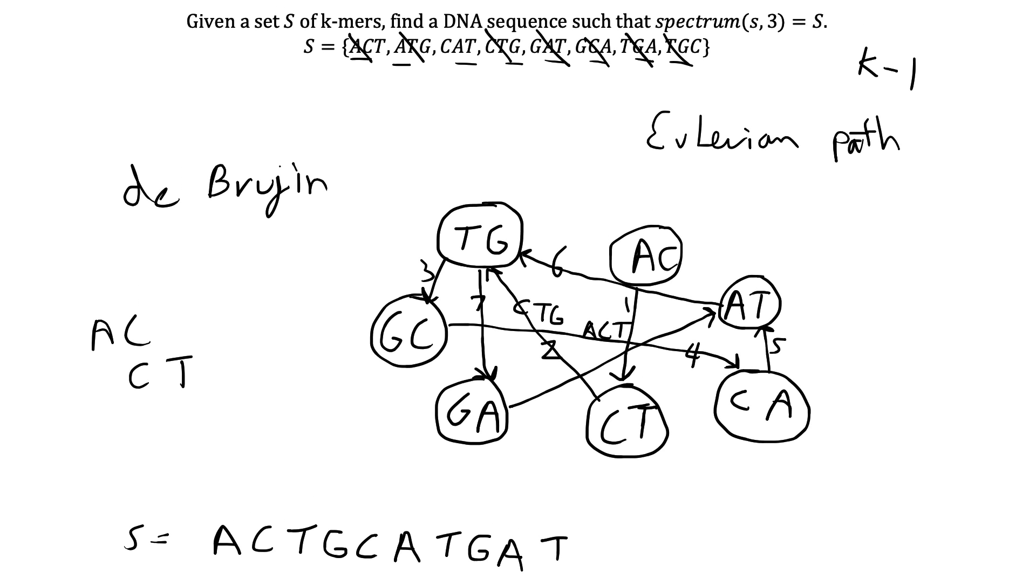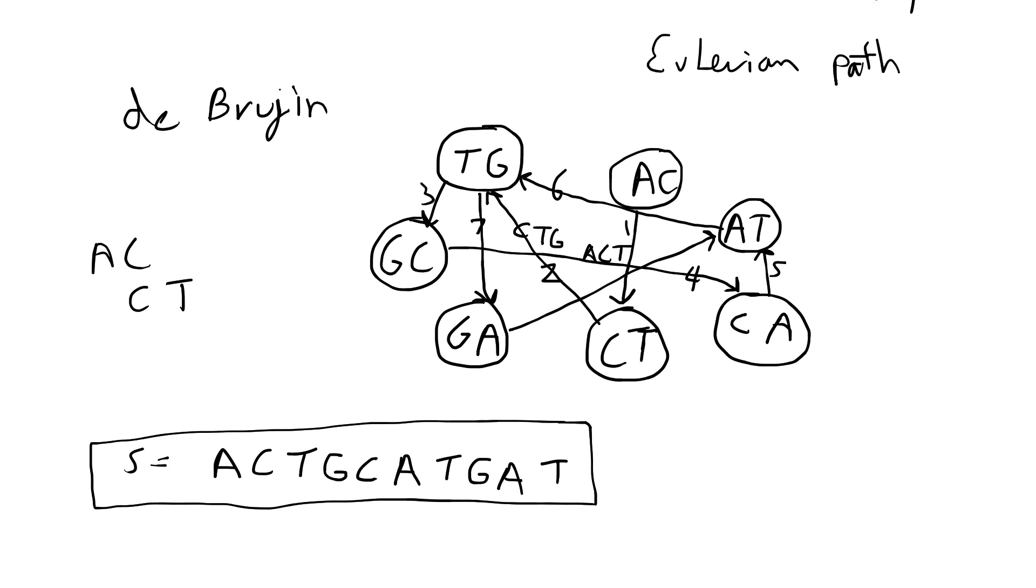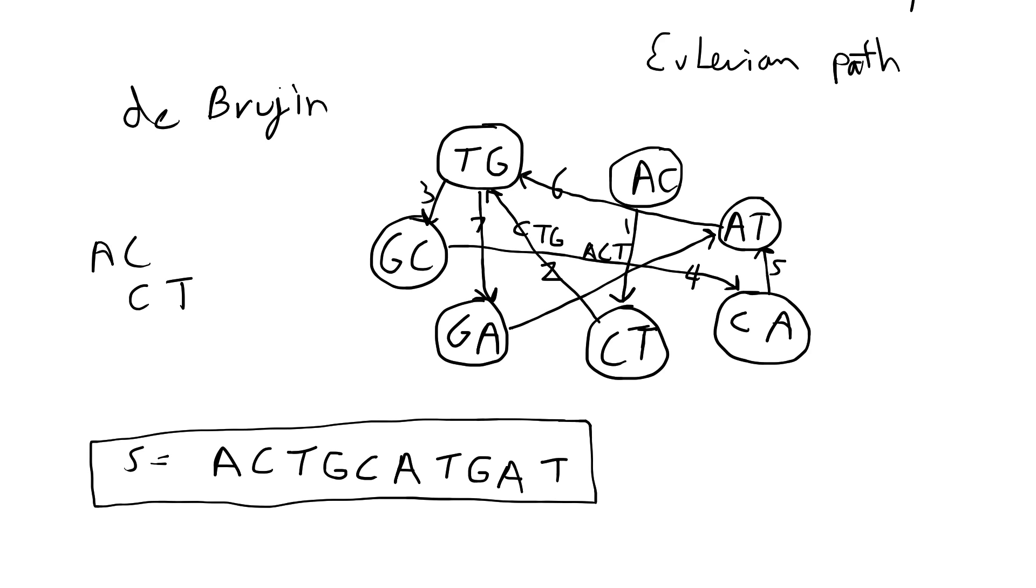From this original set of fragments that are three characters long, we were able to reconstruct a superstring, which is a viable option for the solution of the original DNA sequence. And this was performed using the Eulerian path through the DeBruijn graph.